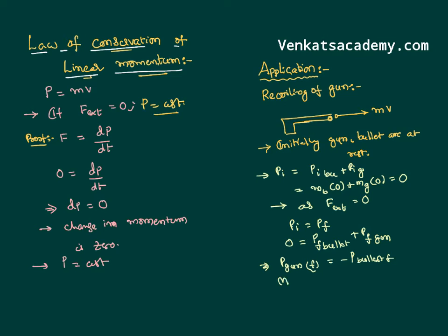So mass of the gun is capital M, velocity of the gun is capital V. Mass of the bullet is small m, velocity of the bullet is V bullet. Based on this, we can calculate the recoil velocity of the gun as minus mass of the bullet times velocity of the bullet divided by mass of the gun. It is very clear that since mass of the gun is always much bigger than the mass of the bullet, the recoiling velocity of the gun is much less than the velocity of the bullet.